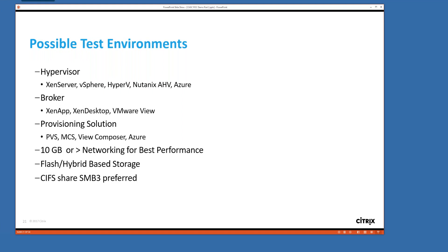For testing, supported hypervisors include XenServer, vSphere, Hyper-V, Nutanix AHV, and Azure. AWS is possible but currently manual. Hyper-V automation via a connector is being worked on and will be available soon. Supported brokers include XenApp and Desktop/View. Supported provisioning solutions are PVS, MCS, View Composer, and Azure. For production, 10-gig networking is recommended, flash or hybrid storage is required for good user experience, and if using elastic layering you need a CIFS share — SMB3 preferred, though Windows 7 does not require SMB3.